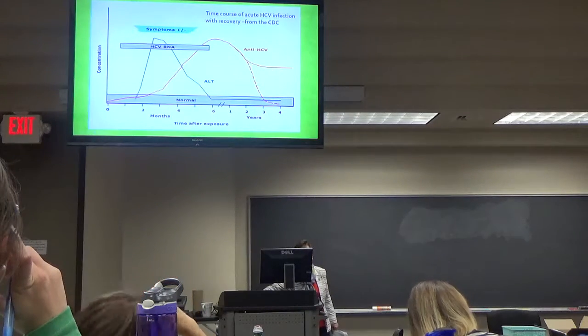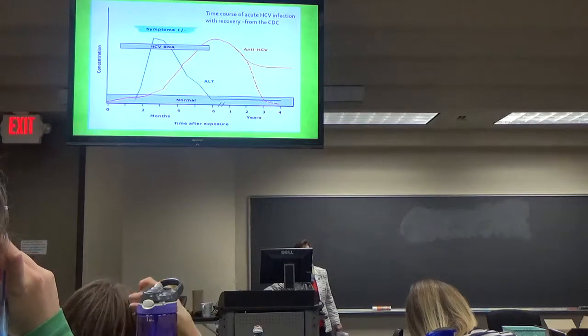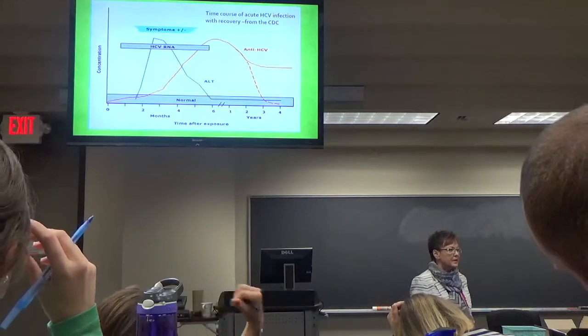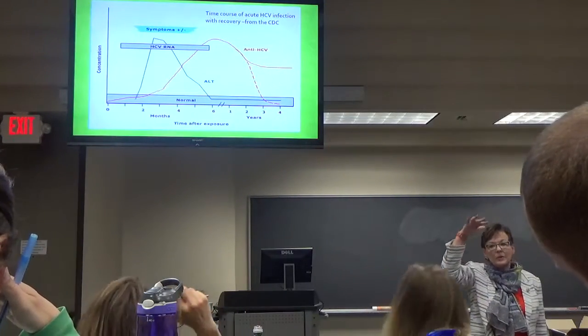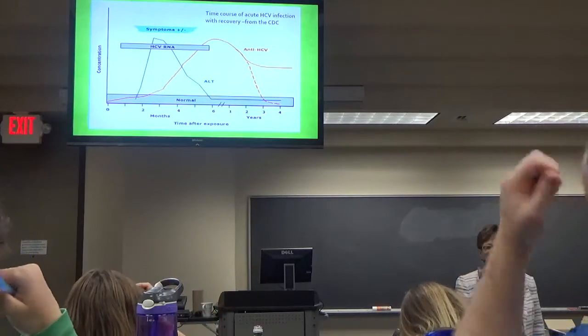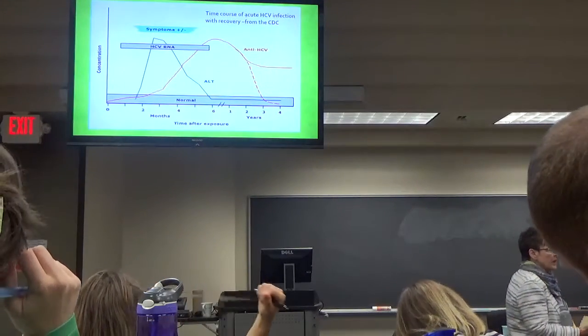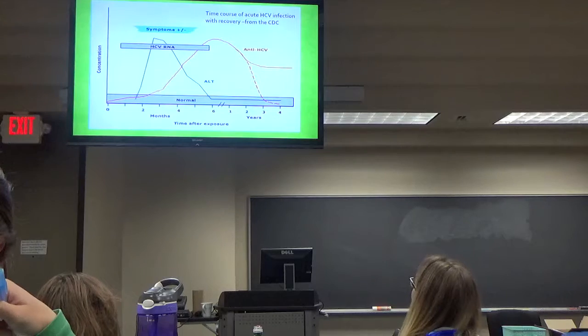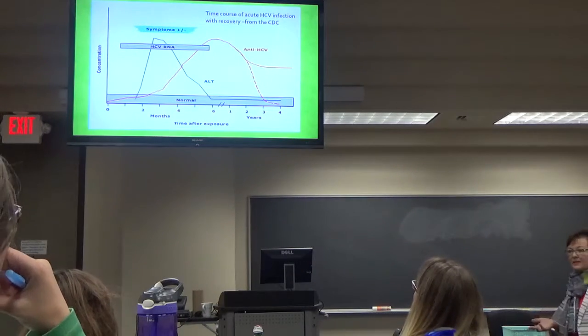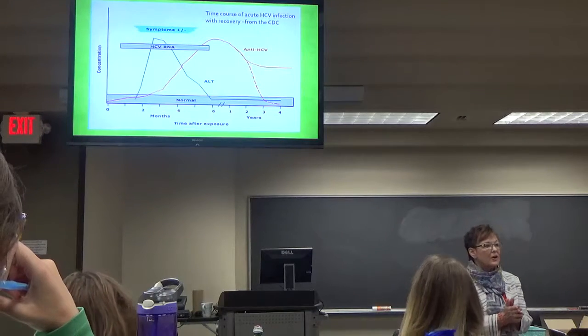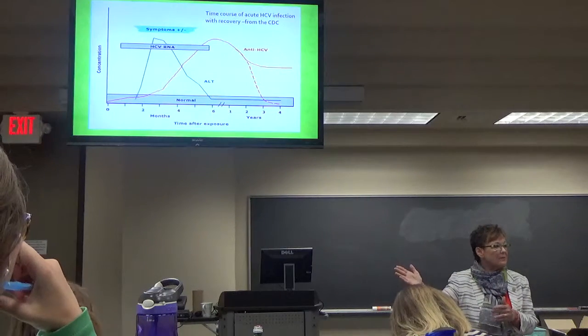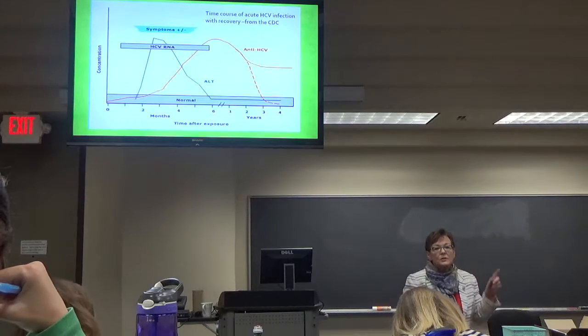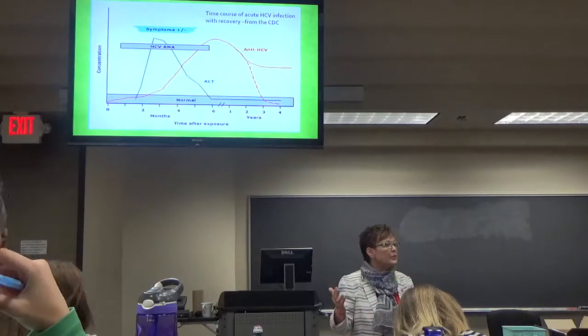So transaminases go up early. The other is that we can measure the RNA viral content pretty early on, especially if they're having an acute attack that you can recognize and suspect the hepatitis. So those we can see for several months, and you'll see that's when they are most symptomatic. The red line is the anti-HCV. That's the antibodies.